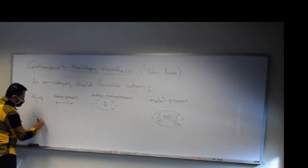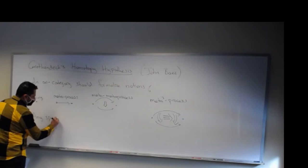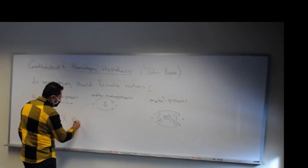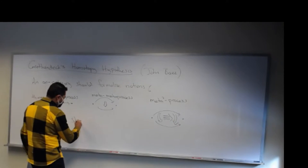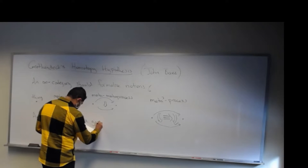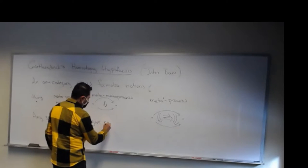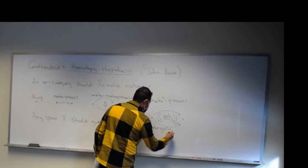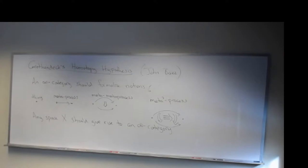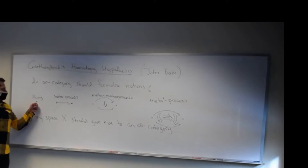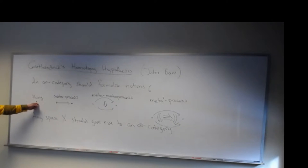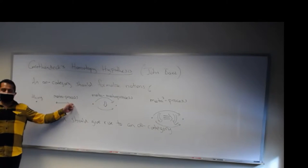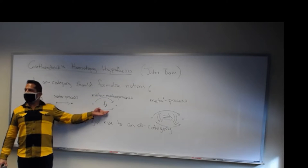Any space should give rise to one of these things as follows. If I have a space, the things in the space are its points. A meta-process would be a path between two points. A meta-meta-process would be a homotopy between paths, and so on.